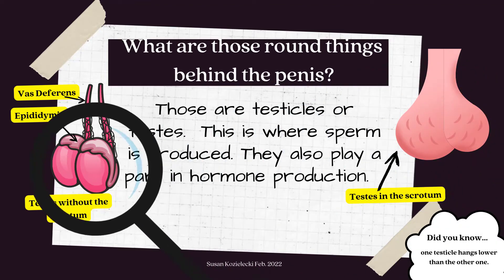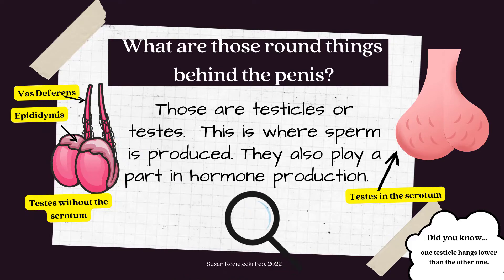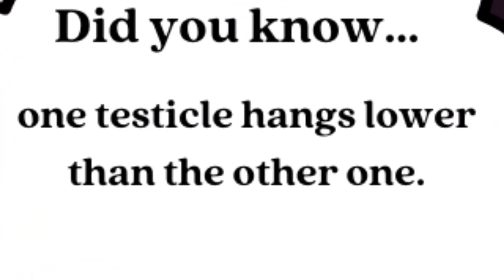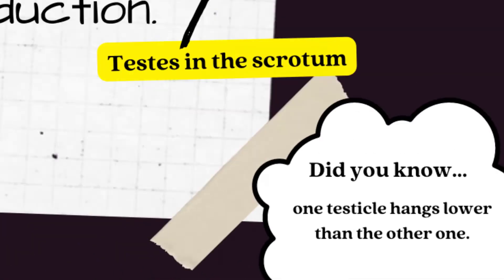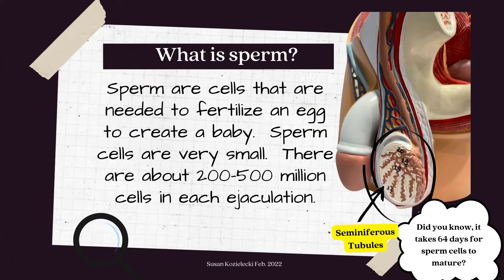What are those round things behind the penis? Those are testicles, or testes. This is where sperm is produced. They also play a part in hormone production. Did you know one testicle hangs lower than the other? This is nature's way of making people more comfortable.